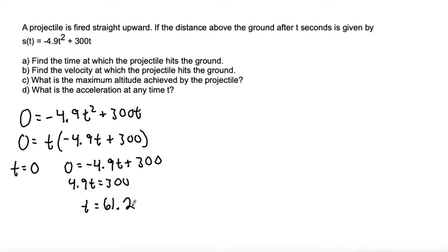And 300 divided by 4.9 is 61.2 rounded to the nearest tenth. So it would take 61.2 seconds for the projectile to hit the ground again. So that would be part A.